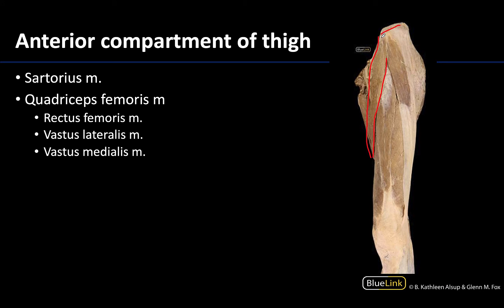The sartorius starts laterally at the anterior superior iliac spine — that end of the iliac crest region — and then it's going to extend all the way to the medial surface of the tibia. This is a very long muscle; in fact, it is the longest muscle of the body. Note that it is quite superficial, running over the quadriceps region, so even though it's considered part of the anterior compartment, it is superficial to the quadriceps.